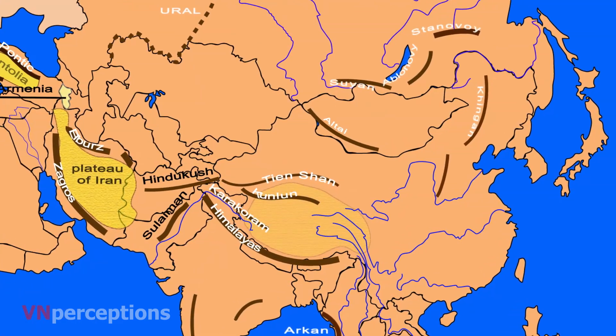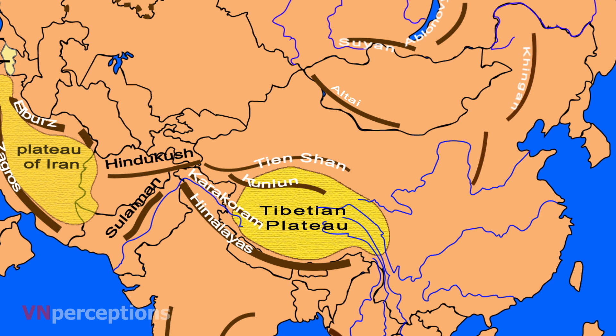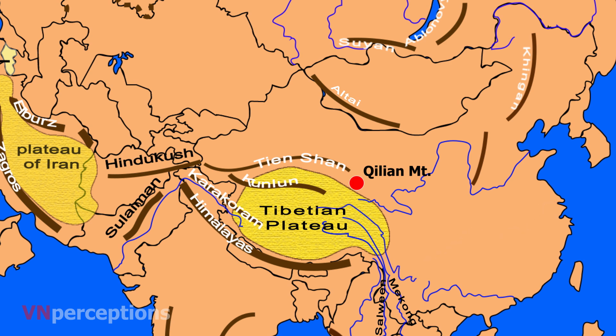Then comes the Tibetan Plateau. It is surrounded by the massive mountain ranges of Asia. The plateau is bordered to the south by the Inner Himalayan Range, to the north by the Kunlun Mountains which separates it from the Tarim Basin, and to the northeast by the Qilian Mountains. To the east and southeast of the plateau lies the mountainous headwaters of the Salween, Mekong, and Yangtze rivers in northwest Yunnan and western Sichuan.